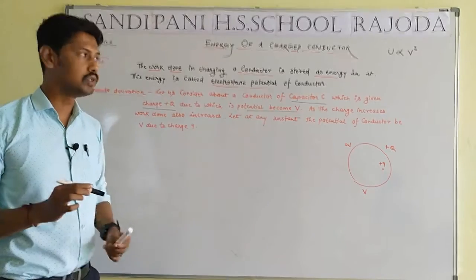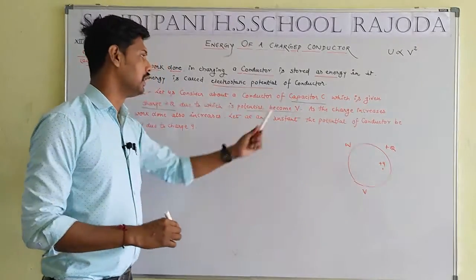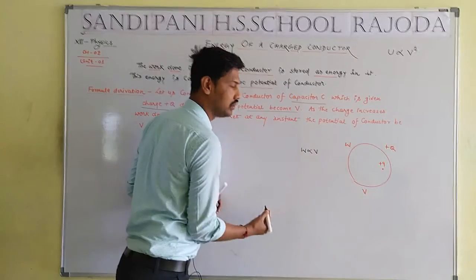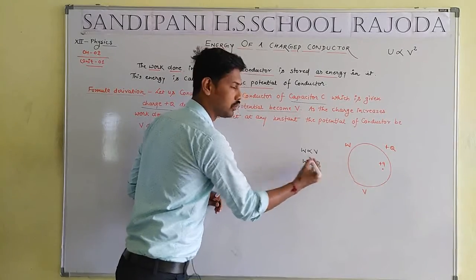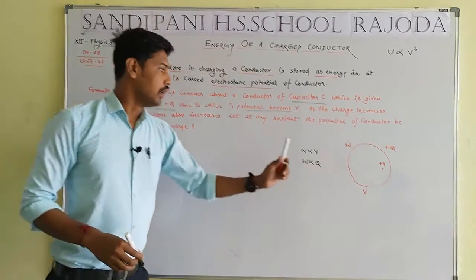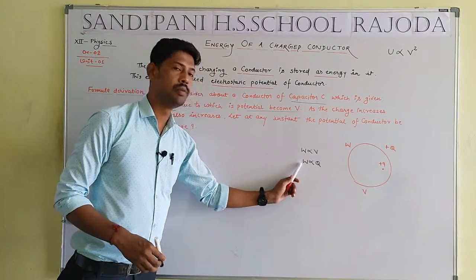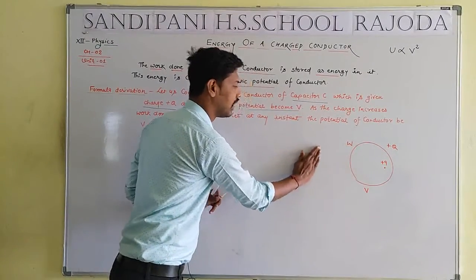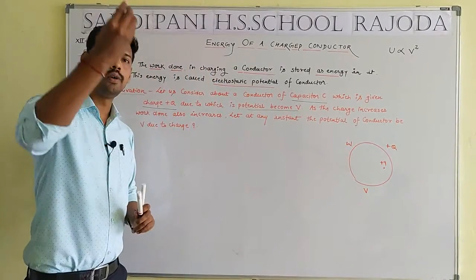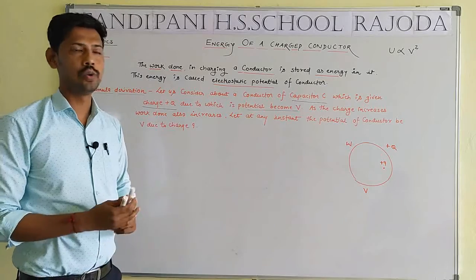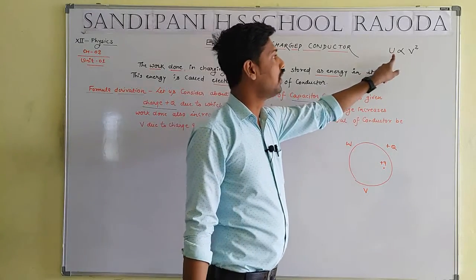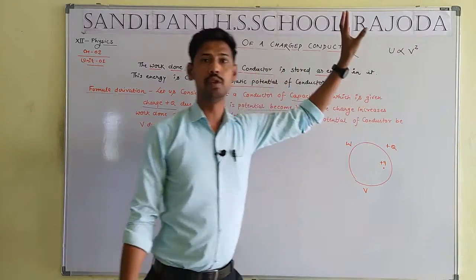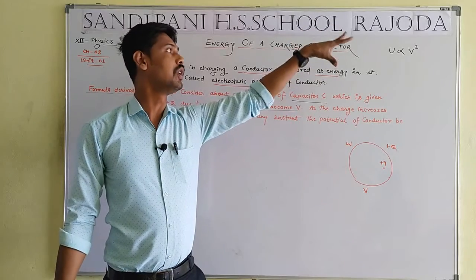Total amount of potential will be equal to V. Note that work done is directly proportional to potential, and work done is directly proportional to total amount of charge. When charge increases, work done increases; when charge decreases, work done decreases. We have to prove that the energy U is directly proportional to V square.